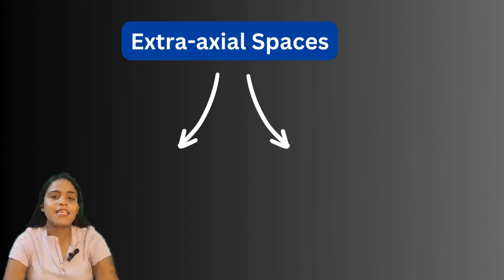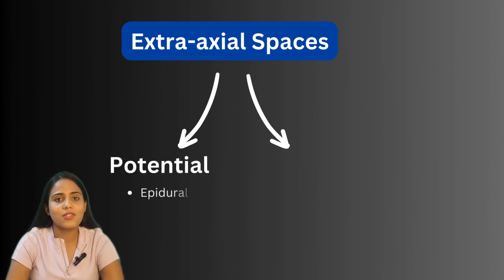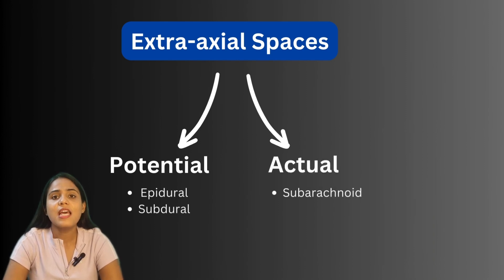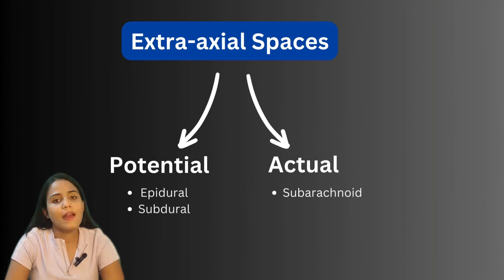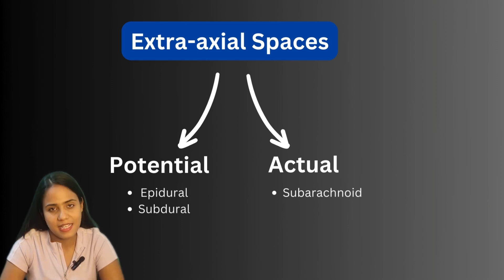These extra-axial spaces do not always exist all the time. The majority of them are just potential spaces — they exist only when there is some collection. The subarachnoid space is the only extra-axial space which is an actual space present always, because it contains CSF.